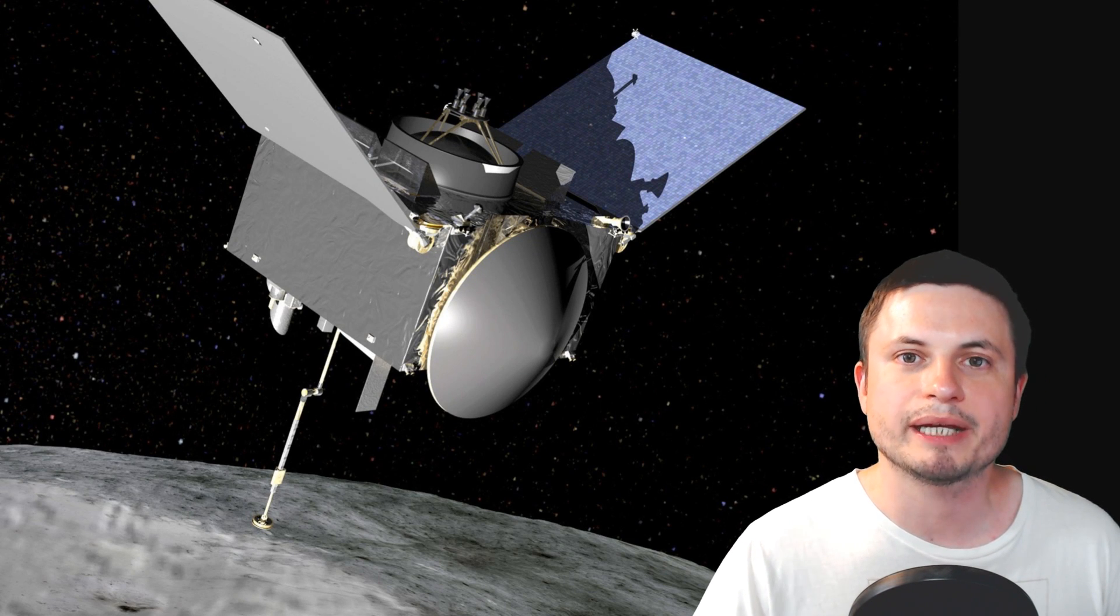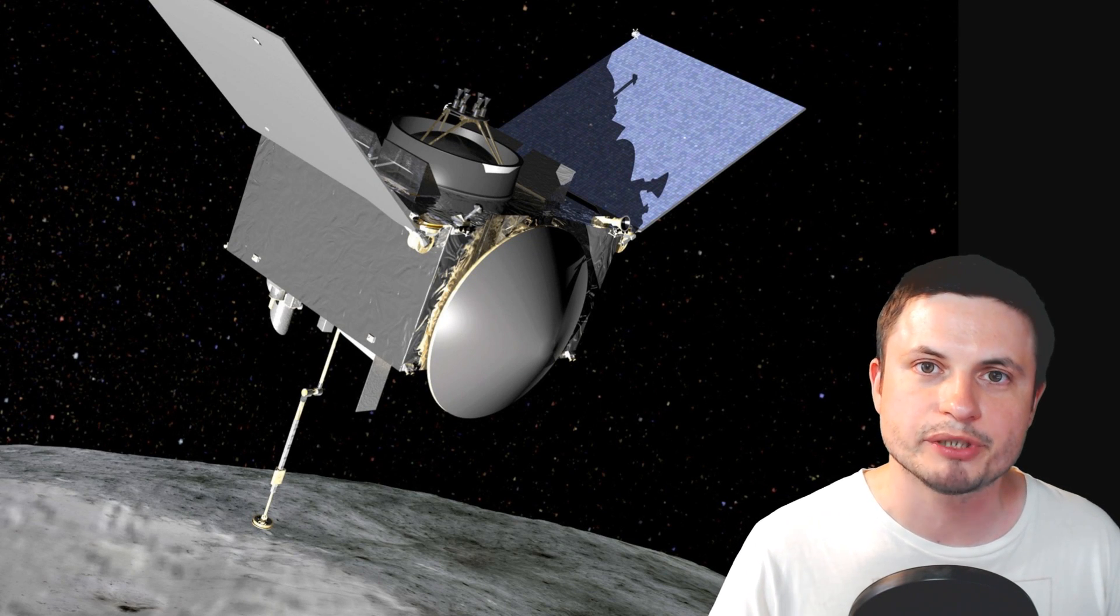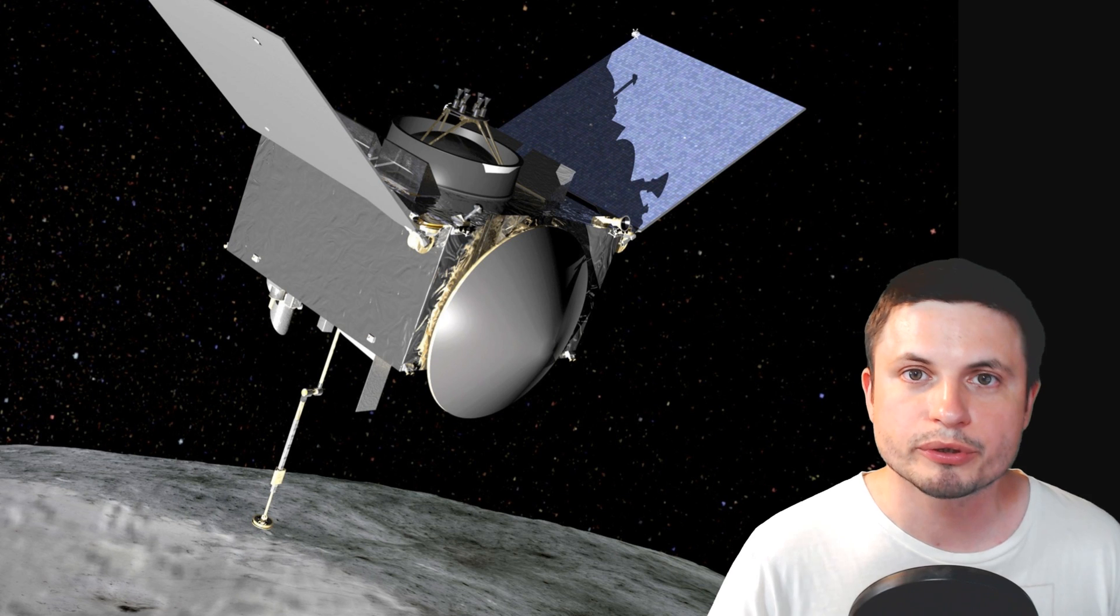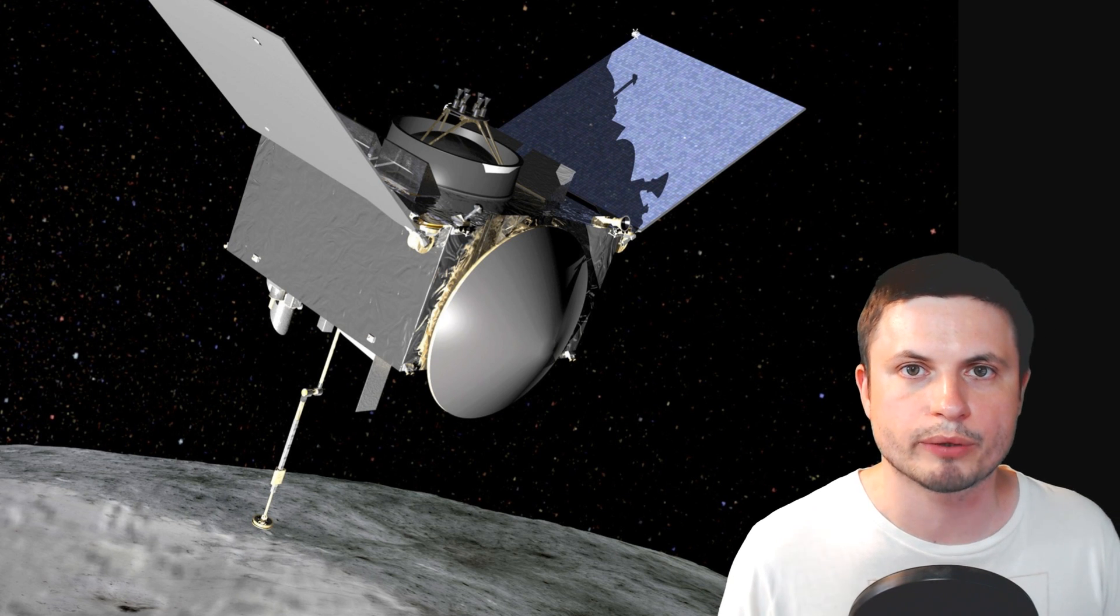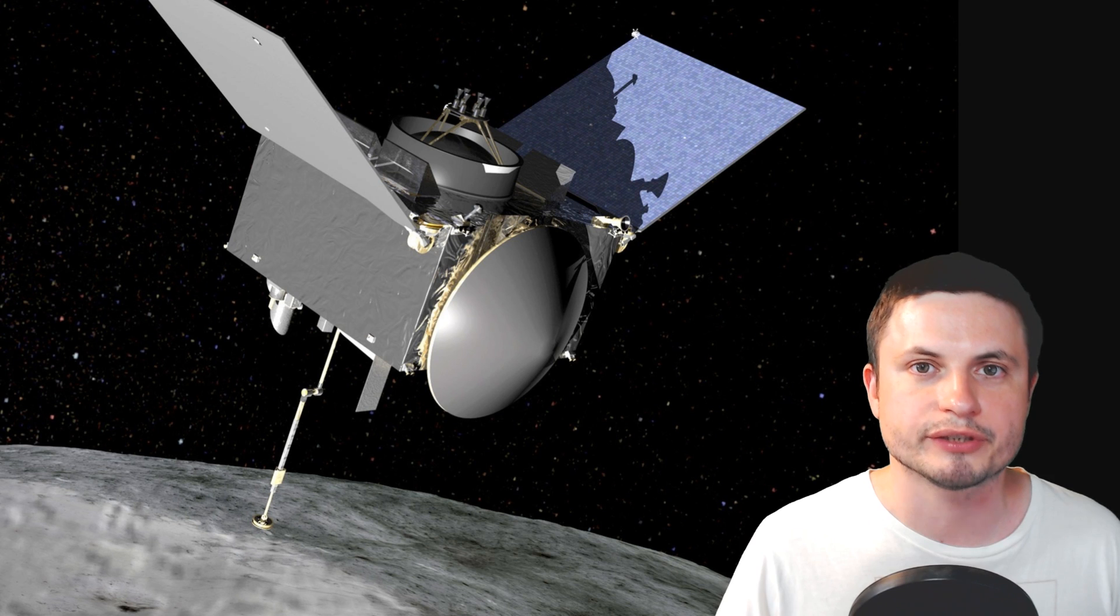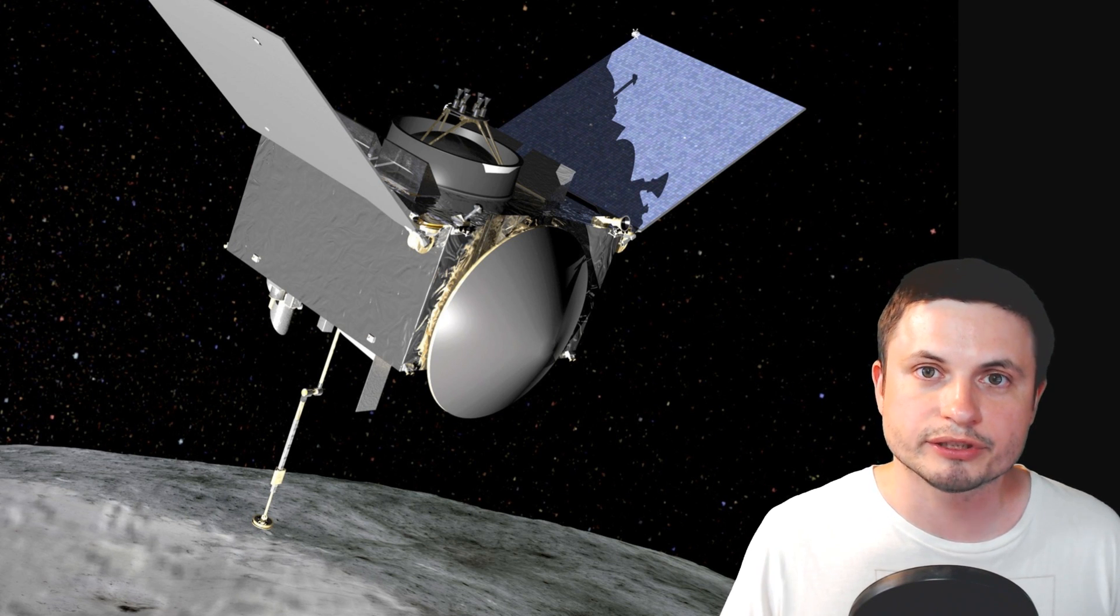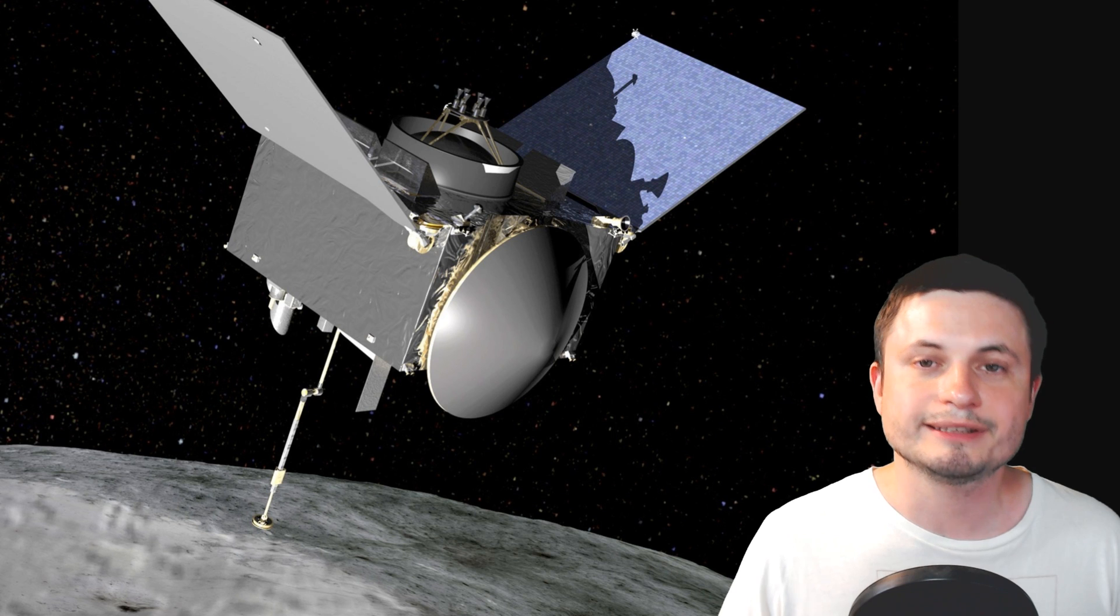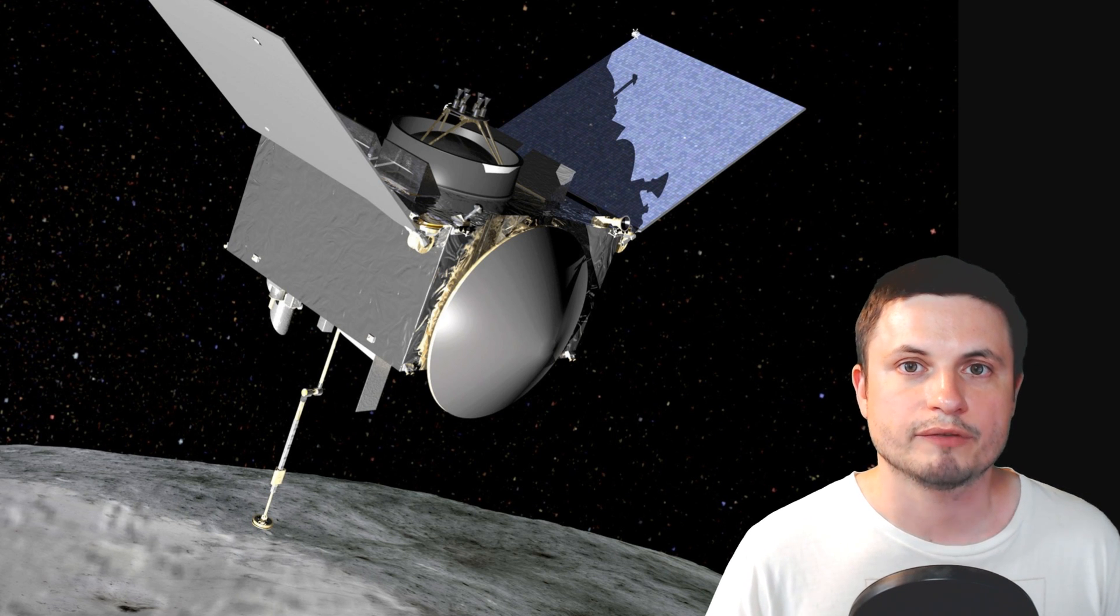And the second mission is by NASA. This is the OSIRIS-REx mission that's also planning to return samples hopefully the next two or three years. So both of these missions, once the samples are returned and studied, will allow us to finally understand if, just like in this study, at least half of the Earth came from the asteroids.